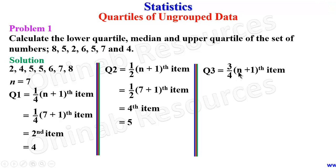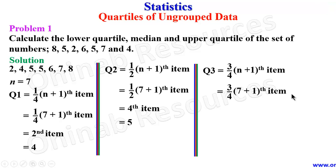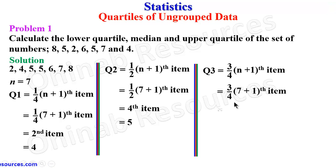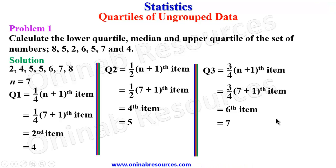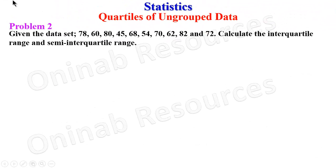For the upper quartile Q3, the formula is 3/4 × (n+1) item. We have 3/4 × (7+1): 8 ÷ 4 = 2, and 2 × 3 = 6, so we look for the sixth item. Counting 1, 2, 3, 4, 5, 6 — the sixth item is 7, so Q3 equals 7. That is the end of the solution to Problem 1.